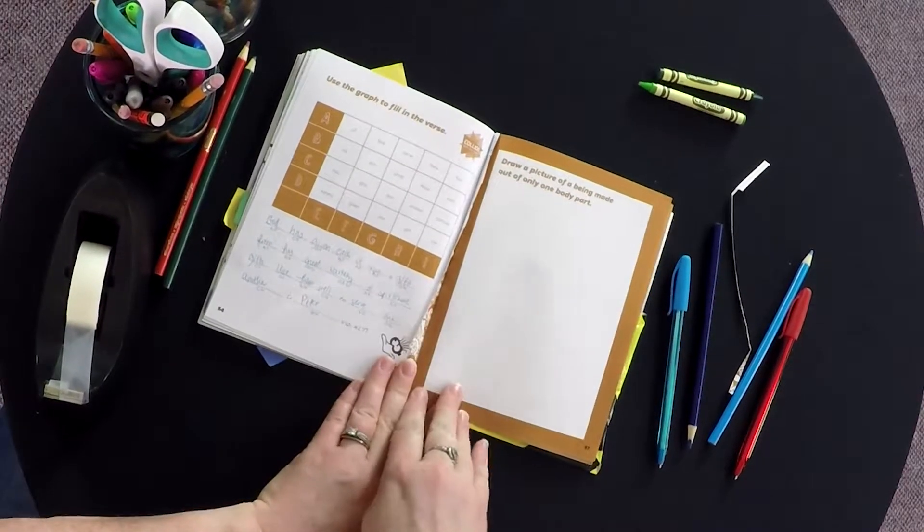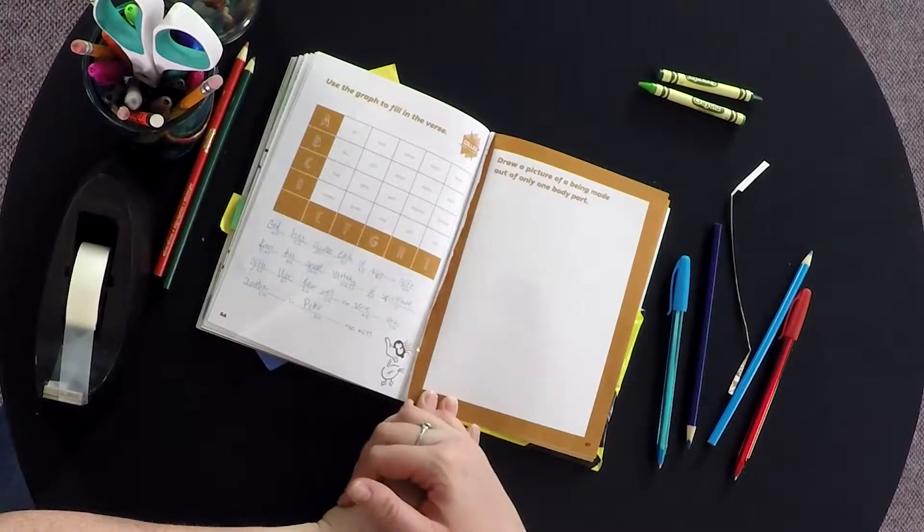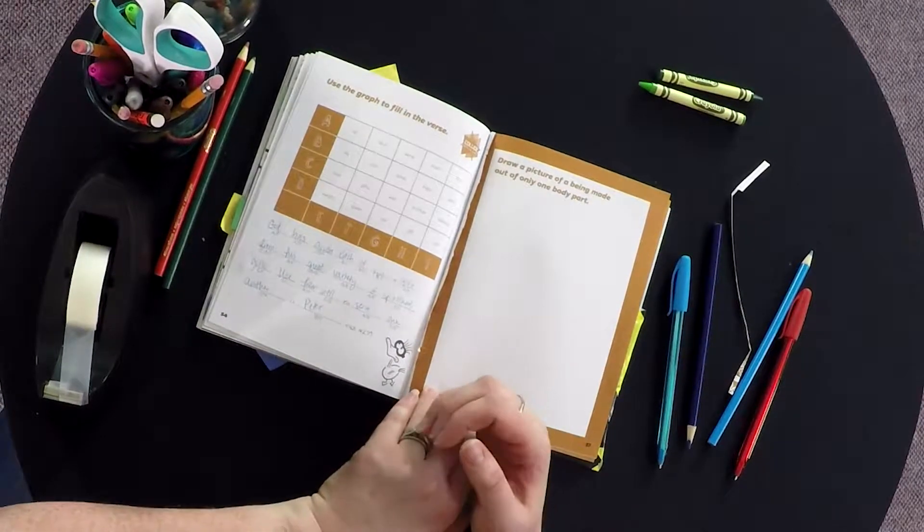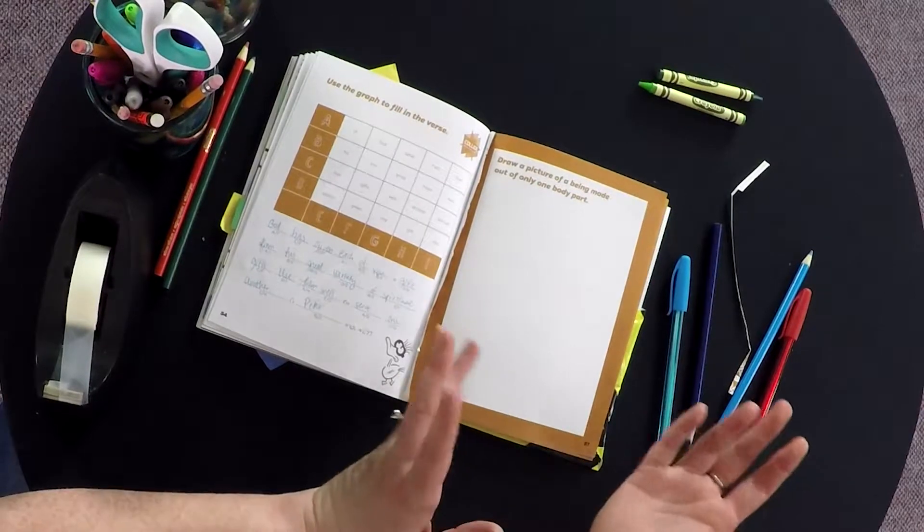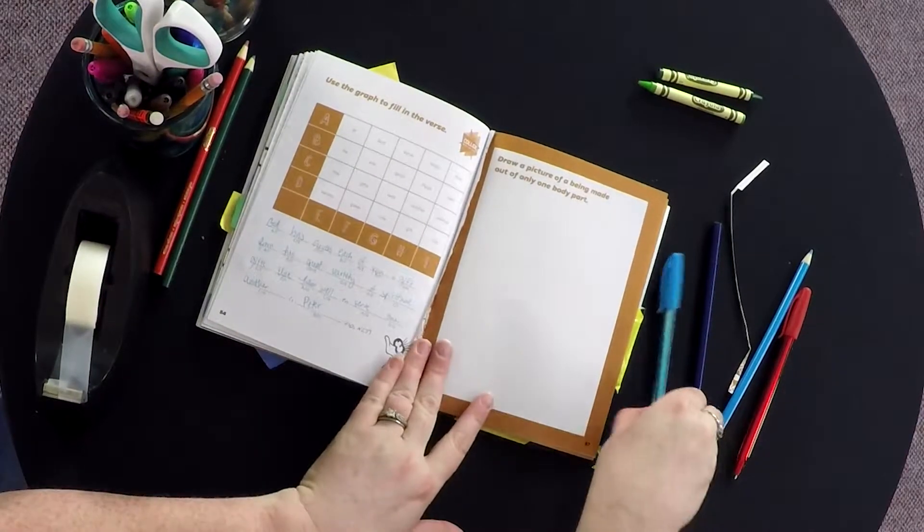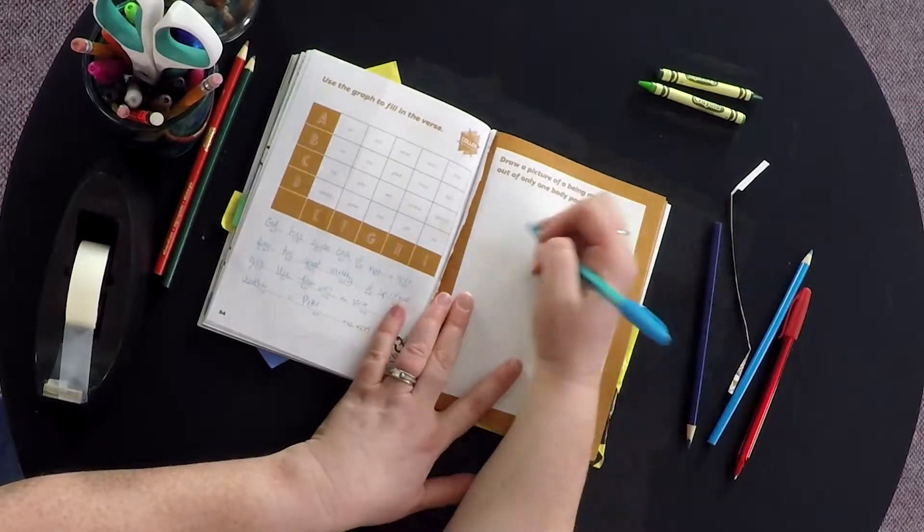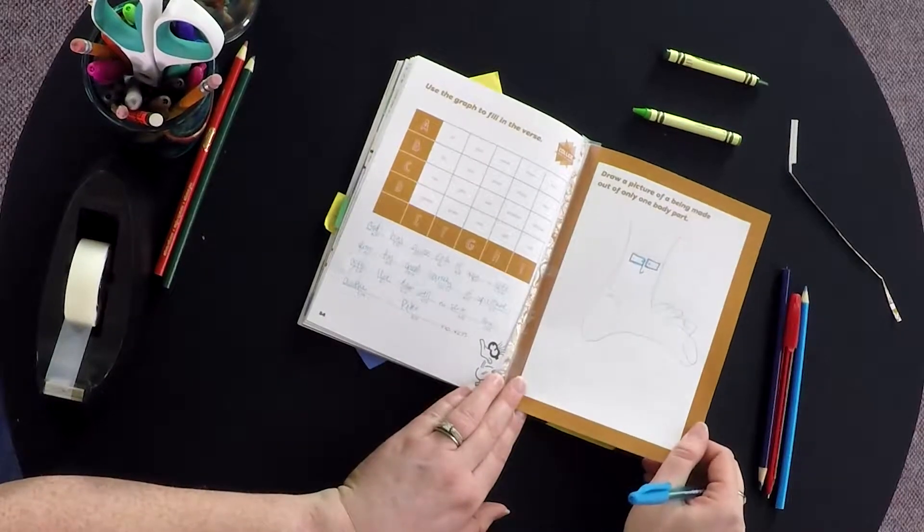For the next activity, they'll turn to page 57. On this page, they'll draw a being made out of only one body part, like an eye or something like that.